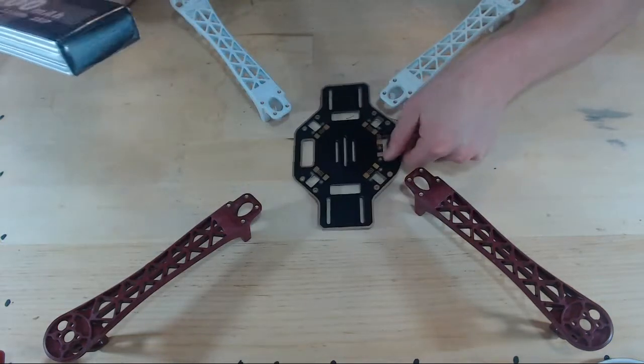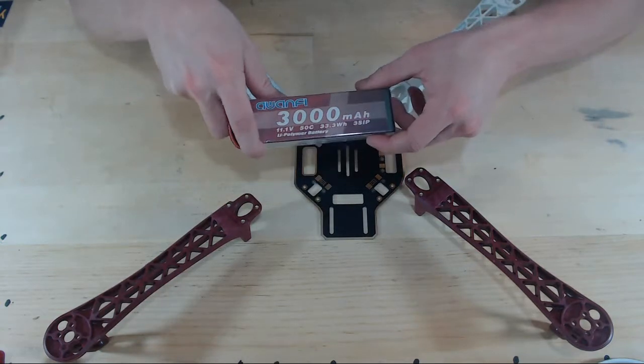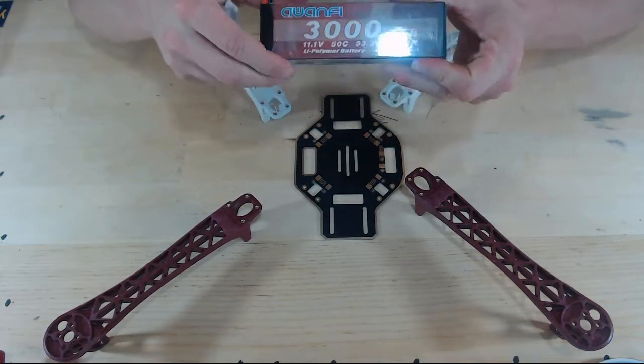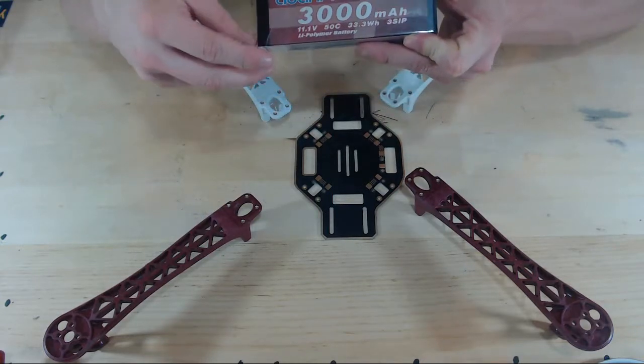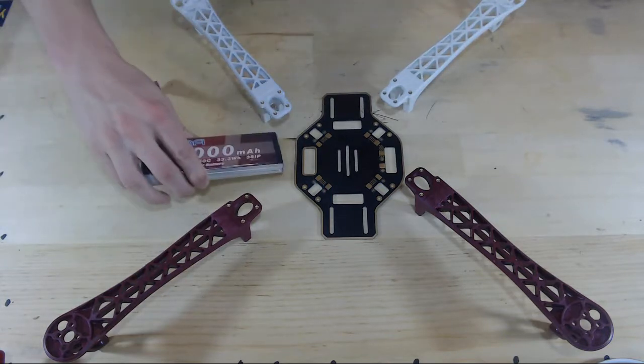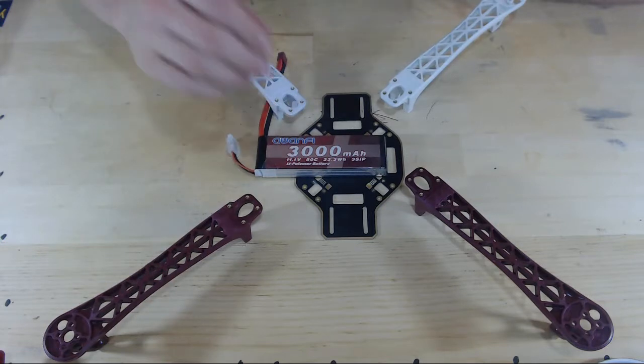Now the cool thing is the battery placement is not a final decision as the flight controller placement is, because it's just going to be Velcroed in. So if at a later point we want to attach some sort of payload to the bottom of our drone and we need the bottom of the bottom plate exposed, then we could just change our mind and put the battery in the middle, and everything would be fine.